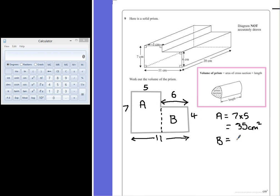So to find the area of rectangle B, B is going to be 6 multiplied by 4, which is 24cm squared.